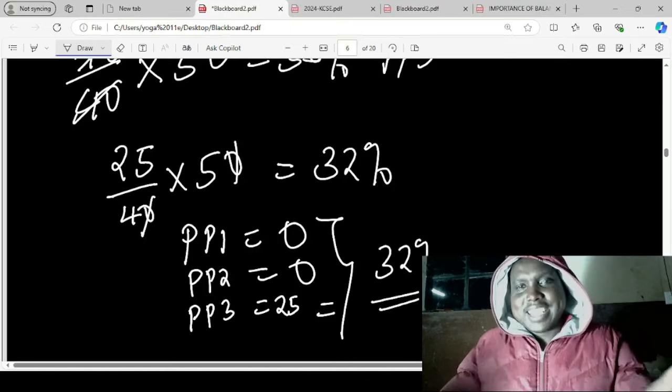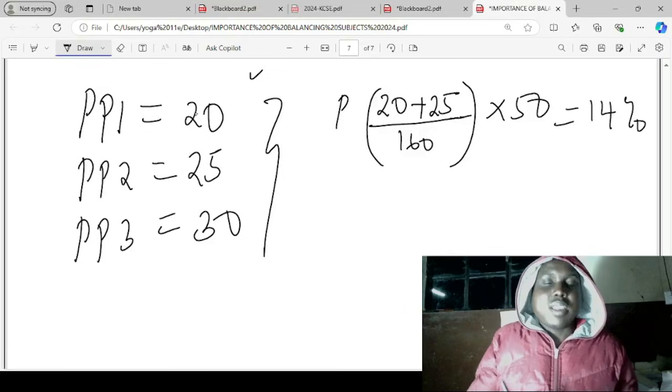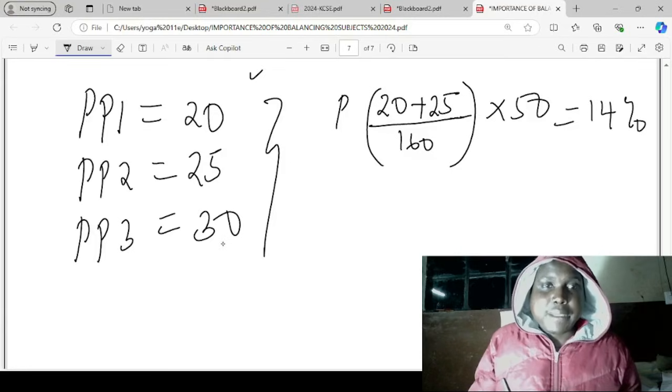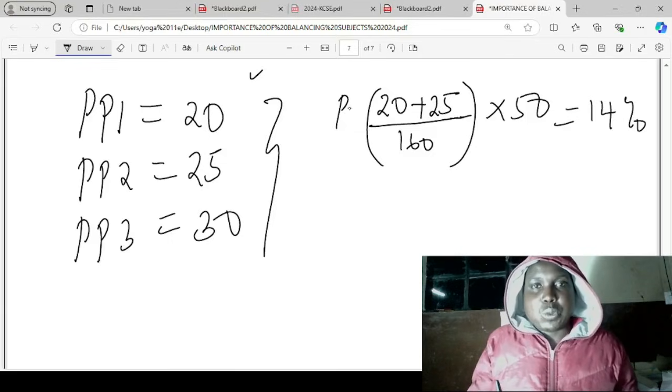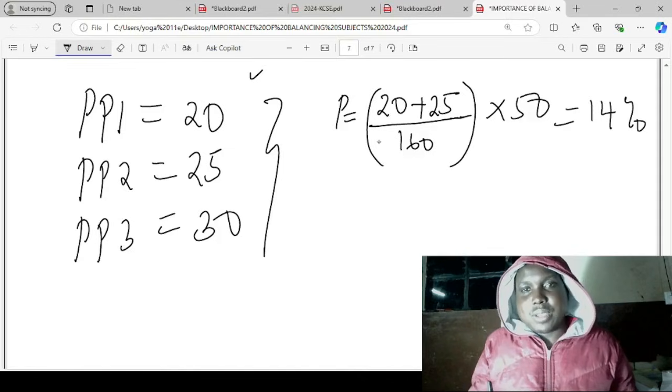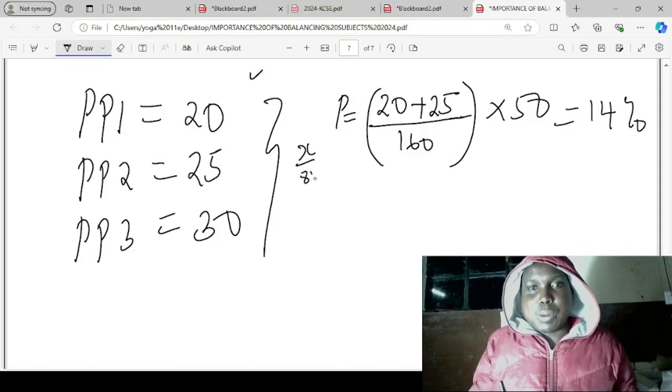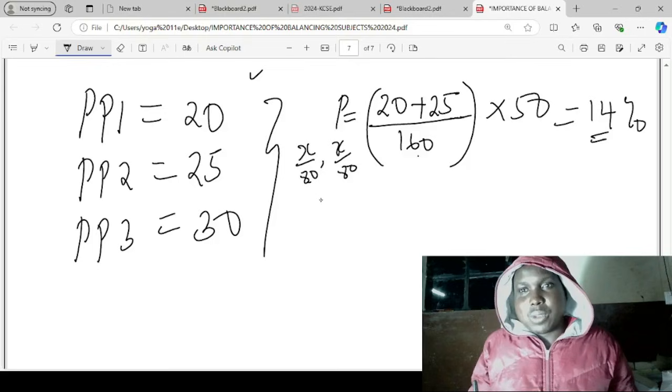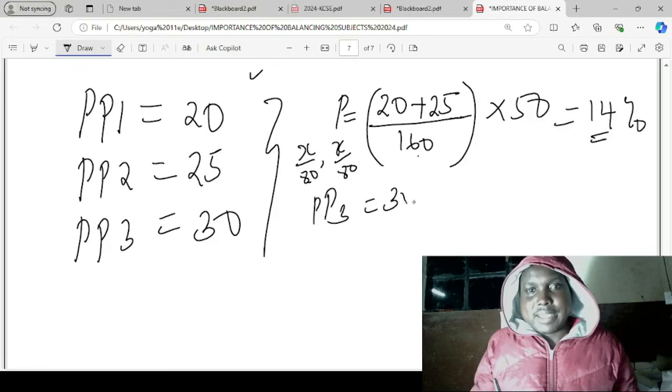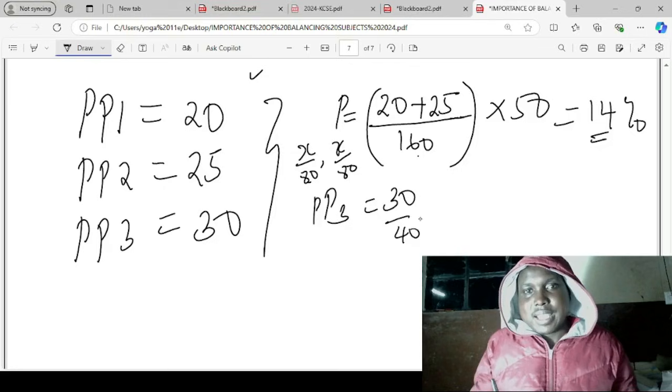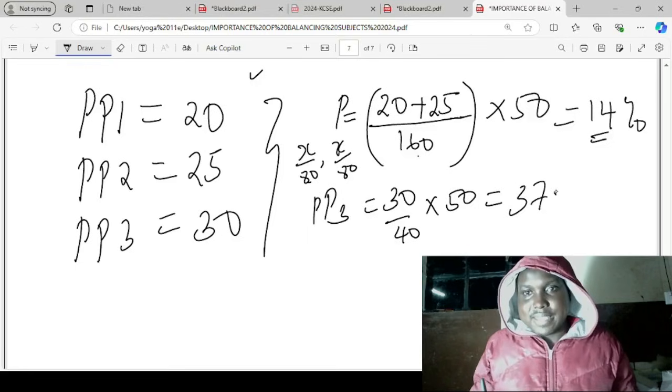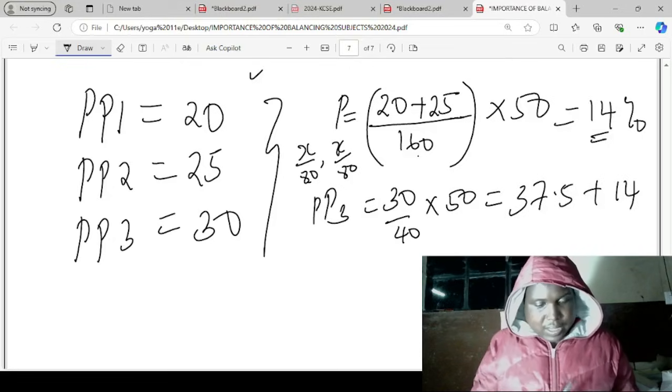Assuming a student scores 20 in Paper 1, 25 in Paper 2, and 30 in Paper 3. Papers 1 and 2: the student will have 20 plus 25 divided by 160 (since both are out of 80, total 160), converted to 50 percent. That gives about 14 percent. Then Paper 3: 30 out of 40 times 50 divided by 40 equals 37.5 percent.